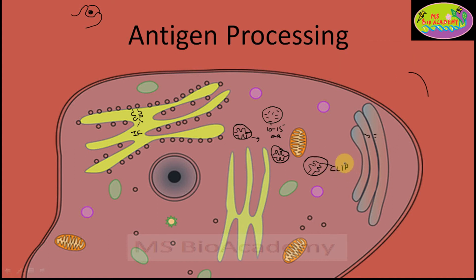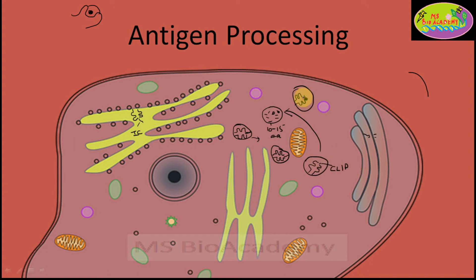This small peptide of the invariant chain is known as CLIP — which stands for Class 2 Associated Invariant Polypeptide. After formation of this CLIP, the vesicle fuses with the endolysosome containing the peptides. All those peptides present in the endolysosome are going to displace this CLIP and occupy the open groove portion of the MHC class 2 molecule that was earlier occupied by the CLIP.